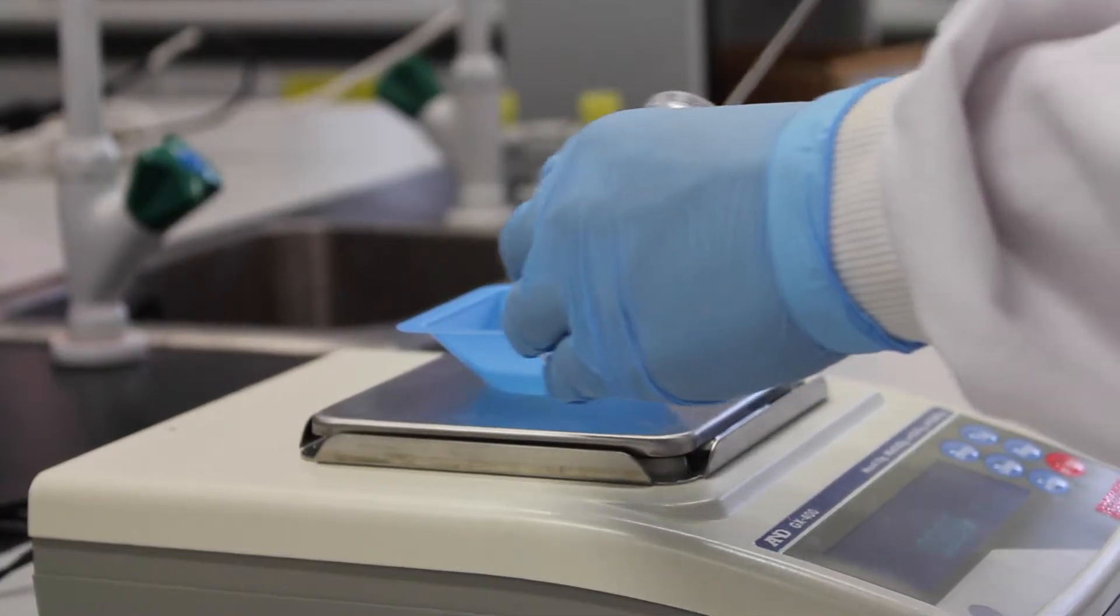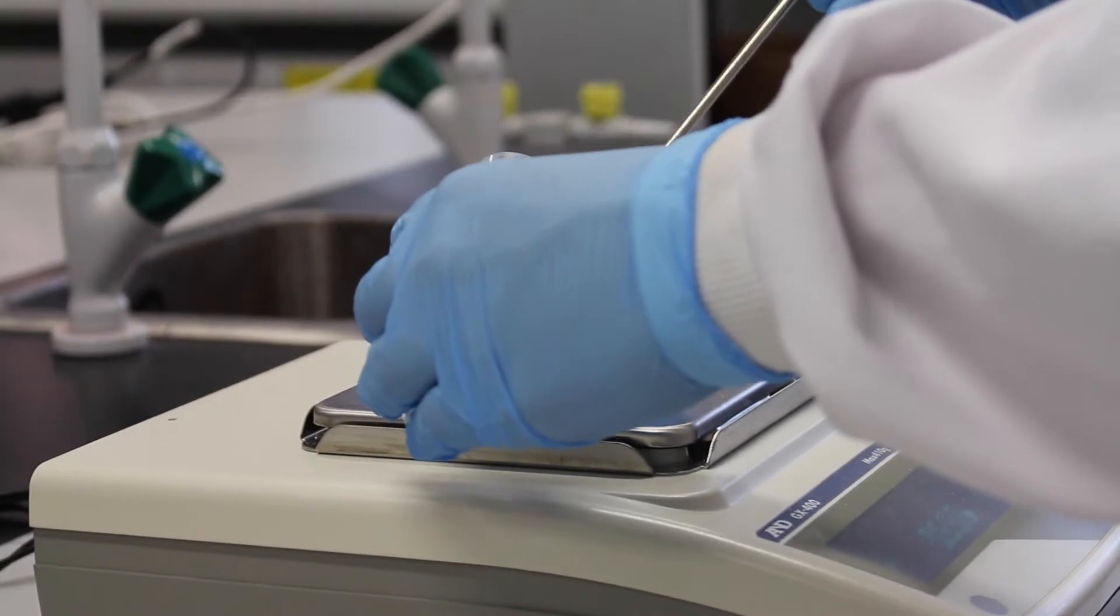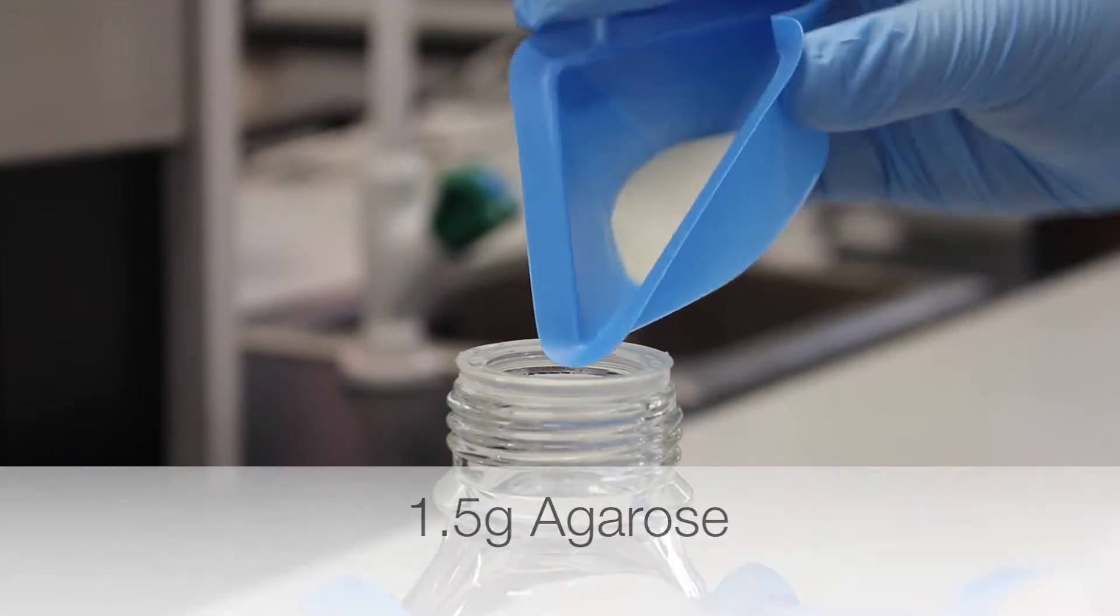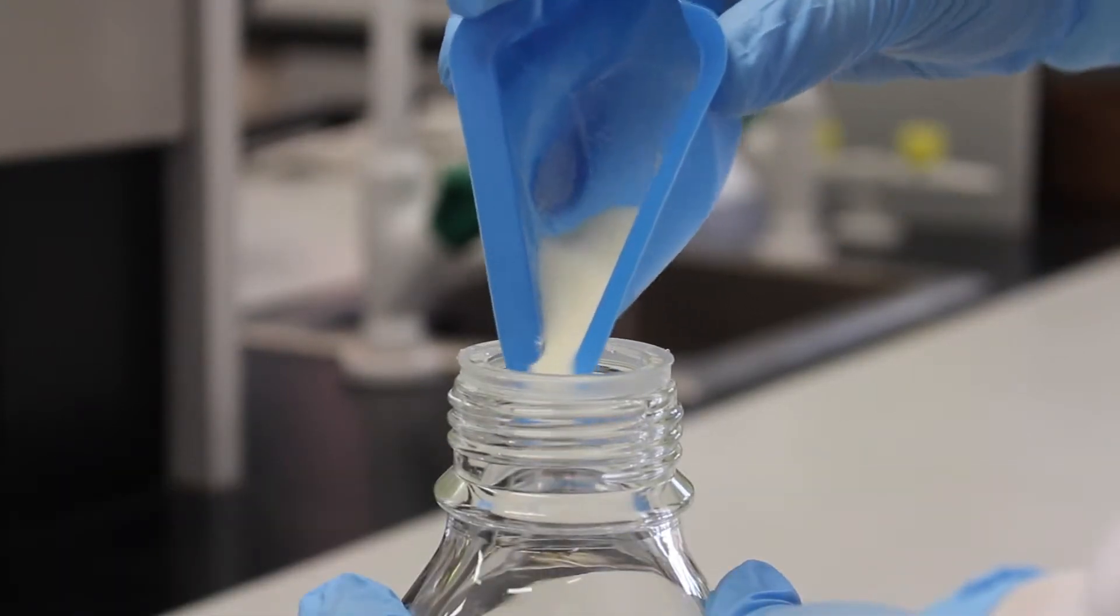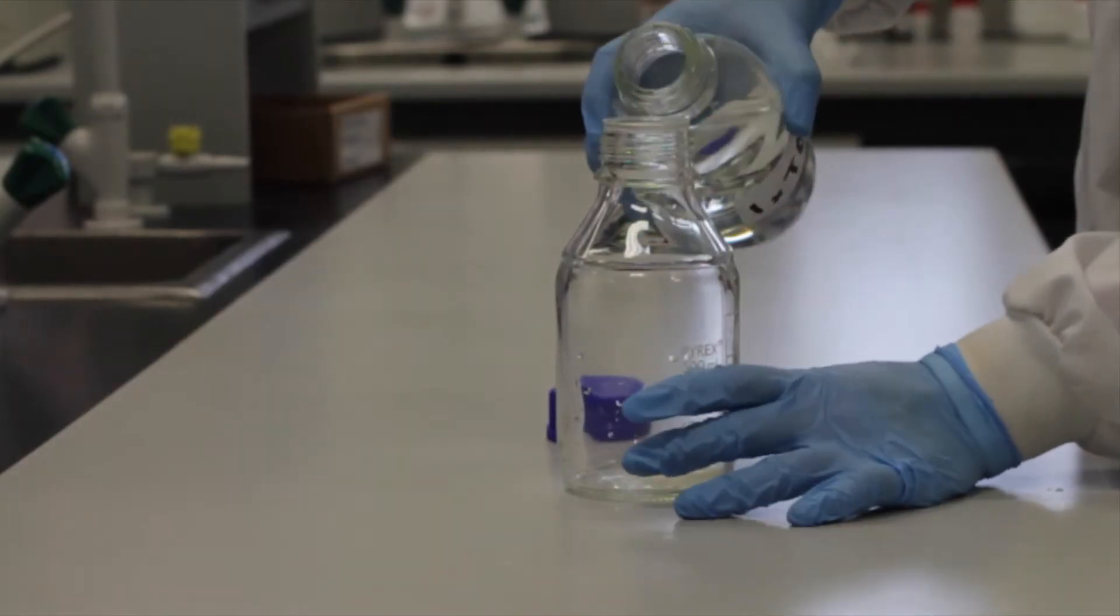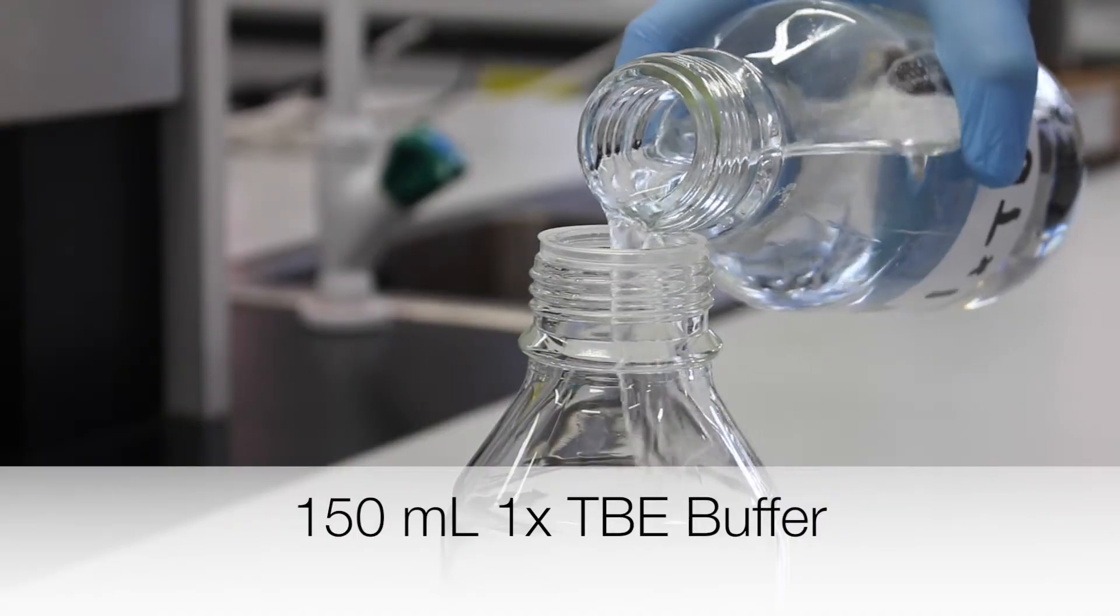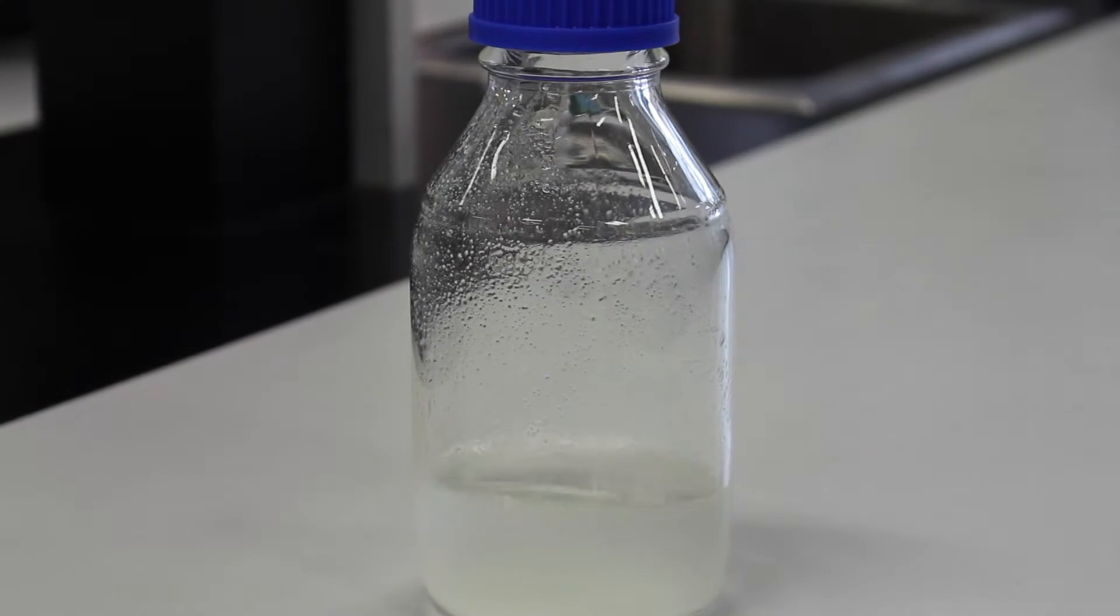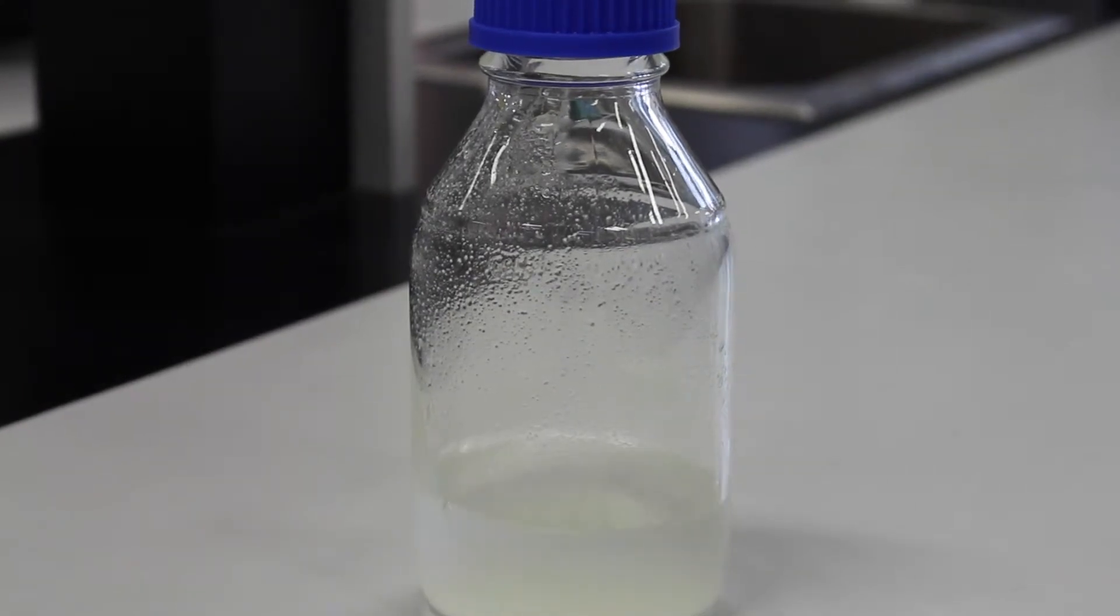For 150 milliliters of a 1% agarose gel, 1.5 grams of agarose powder is weighed out. The agarose is transferred to a glass bottle. 150 milliliters of TBE buffer is added. The glass bottle is swirled to fully dissolve the agarose quickly.